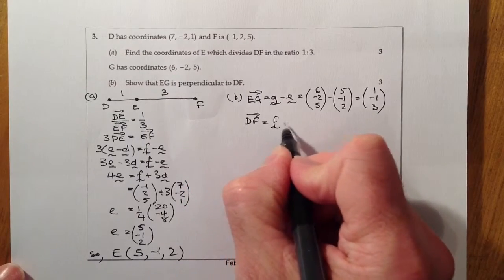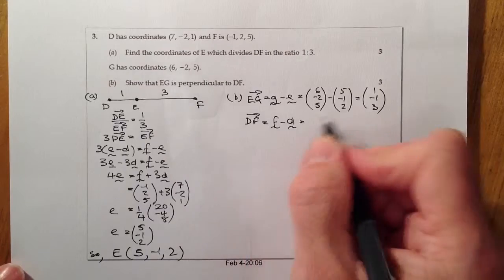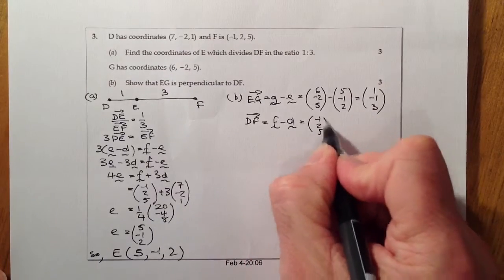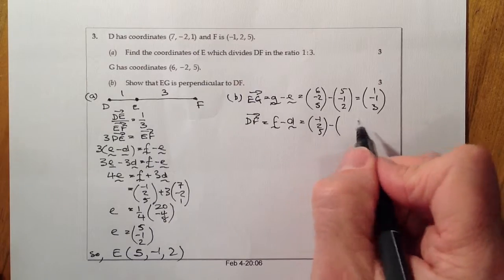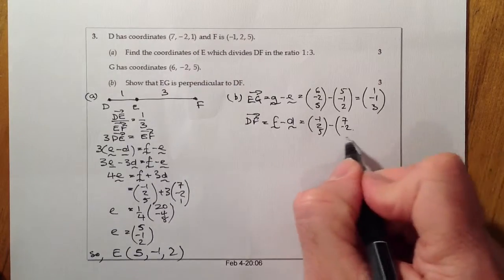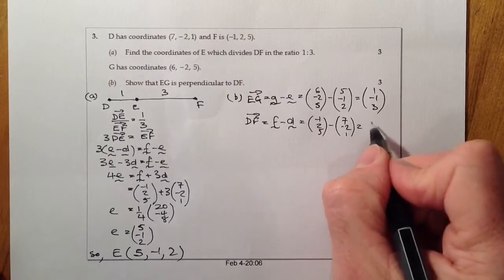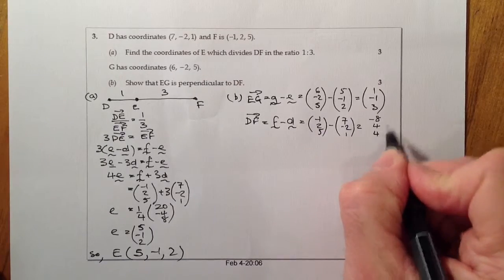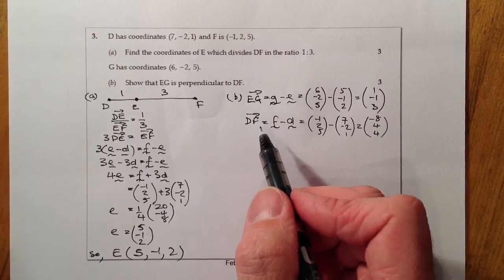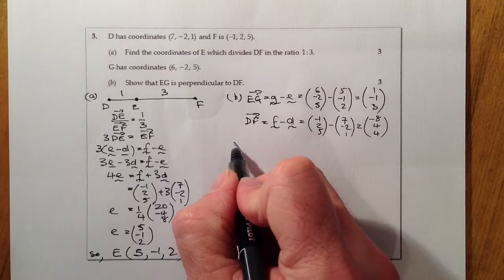I'll then work out DF. That's F minus D, which equals (-1, 2, 5) minus (7, -2, 1). That should work out to be (-8, 4, 4). So those are my vectors.